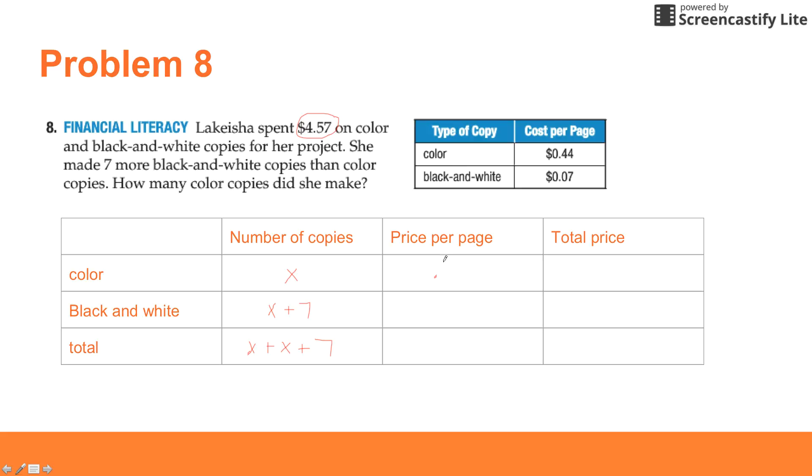The price per page we get from our table up here. Color copies are $0.44, black-and-white copies are $0.07. We don't really need to worry about the price per page here, that's not so much of an issue. Again, we're going to take the number of copies times the price per page, and that has to equal the total price. I'll let you fill that in. Then we're going to take our total price of color copies plus our total cost of black-and-white copies, and that has to equal $4.57. I'll let you do the rest of that, but that should help you get it set up.